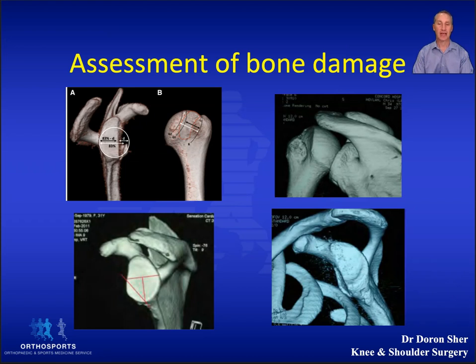A Hill-Sachs lesion is seen in up to 90% of patients after their first anterior shoulder dislocation, and with each subsequent dislocation the size and number of Hill-Sachs lesions increases.